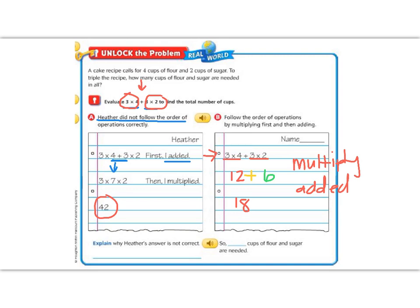But look at the vastly different number we got. She got 42 and we got 18. Well, we know that 18 is correct. Why is Heather's answer not correct? Well, we said it was because she added instead of multiplying first. So she needs to multiply first.